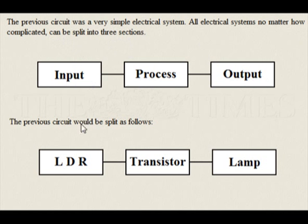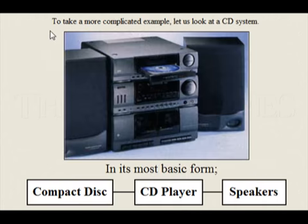The previous circuit would be split as follows: LDR, transistor, lamp. To take a more complicated example, let us look at a CD system. In its most basic form, the input is provided by the compact disc, the process occurs in the CD player, and the output is provided by the speakers.